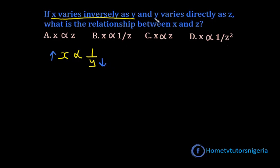What about the other part of the question which says Y varies directly as Z? This can be represented with the formula Y varies directly as Z. And this means that if the variable Y increases, the variable Z will also increase.